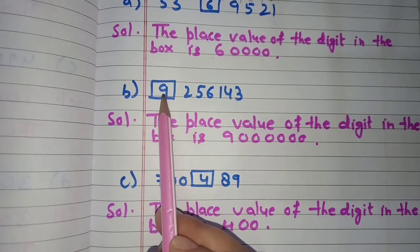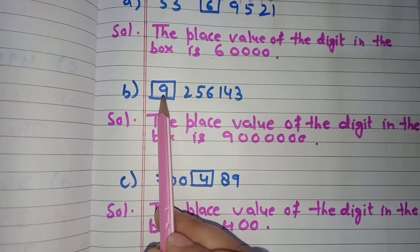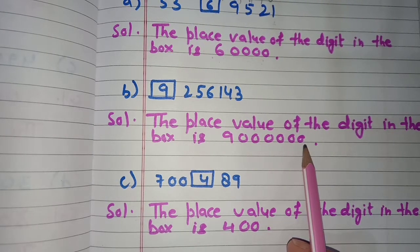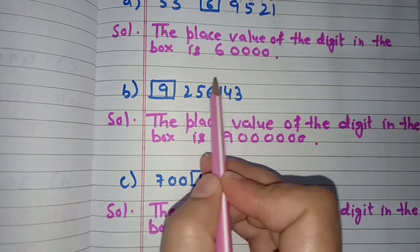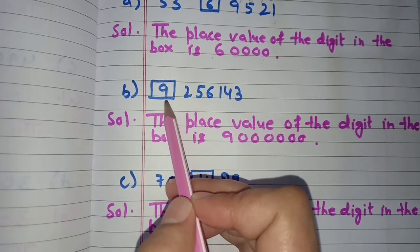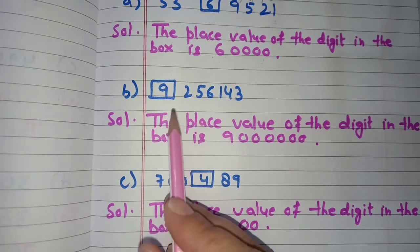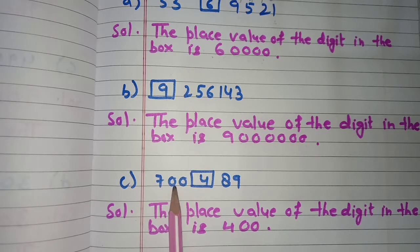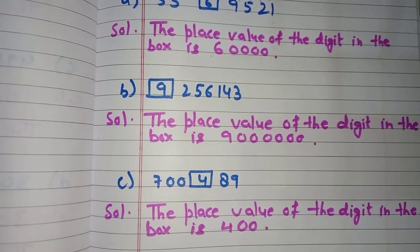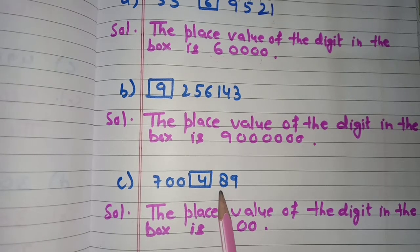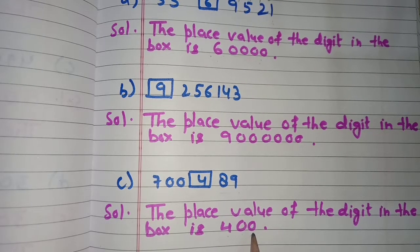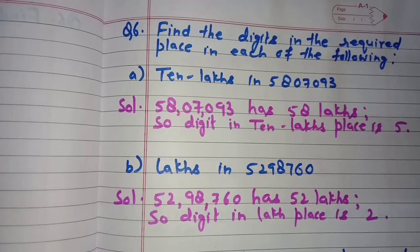Part B is 92,56,143. The boxed digit is 9. Count the digits after 9 and place that many zeros — the place value of 9 is 90 lakhs. For the next number, 7,00,489, the boxed digit is 4. Four is at the Hundreds place, so its place value is 400.